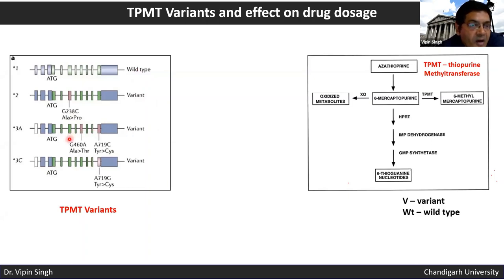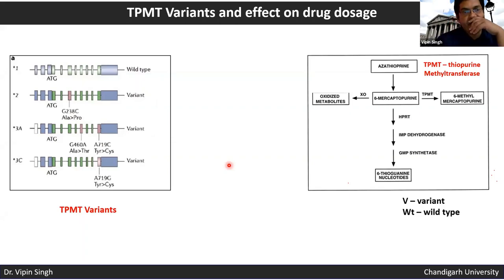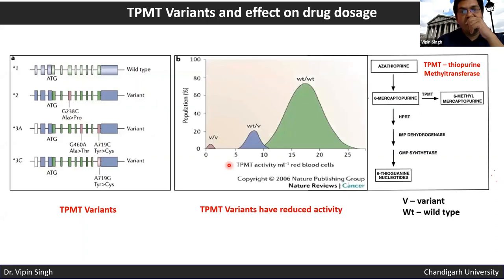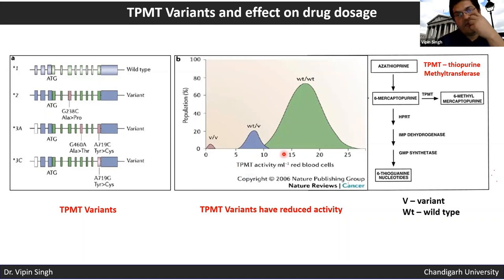TPMT is polymorphic in the human population. Depending on whether an individual is wild-type or variant for TPMT, the drug dose may be toxic or less toxic. TPMT activity is very low in homozygous variant individuals, slightly higher in heterozygous individuals, and very high in wild-type individuals.